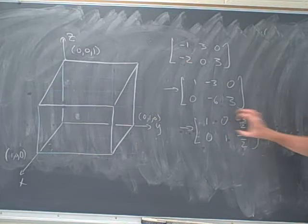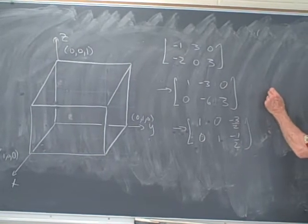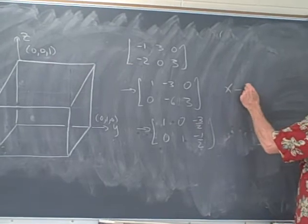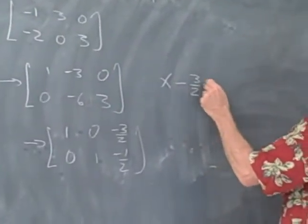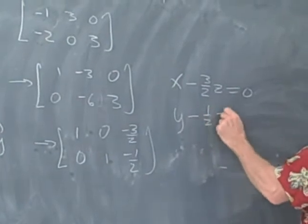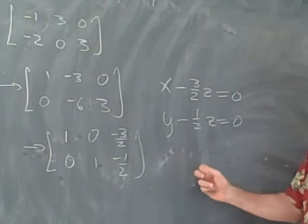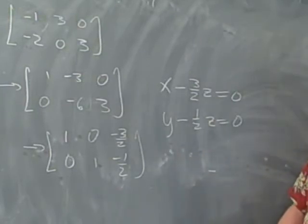So this is the reduced row echelon form of the original matrix, and you can think about this as describing a system of linear homogeneous equations. So x minus 3 halves z is equal to 0, y minus 1 half z is equal to 0, and this is usually my favorite point where I'm teaching linear algebra, I say, look to the one student in class who's not paying attention, and I say, okay, what is z?